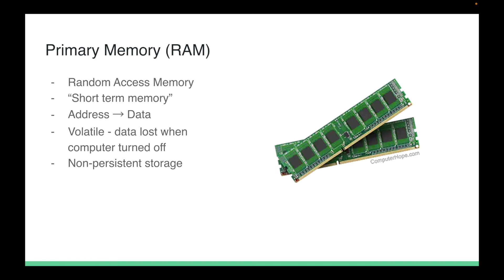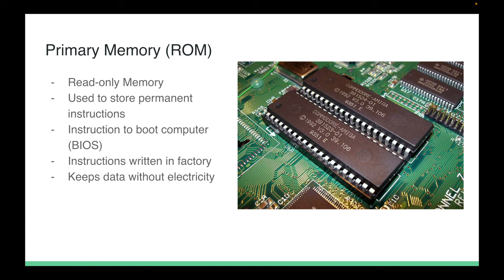Primary memory is not only RAM but also ROM — read-only memory — used to store permanent instructions. These are the most basic instructions for a computer, including how to boot it. That screen you see before Windows loads, and the BIOS screen you access to overclock your computer or change fundamental settings, or when installing an operating system — that is stored in ROM.